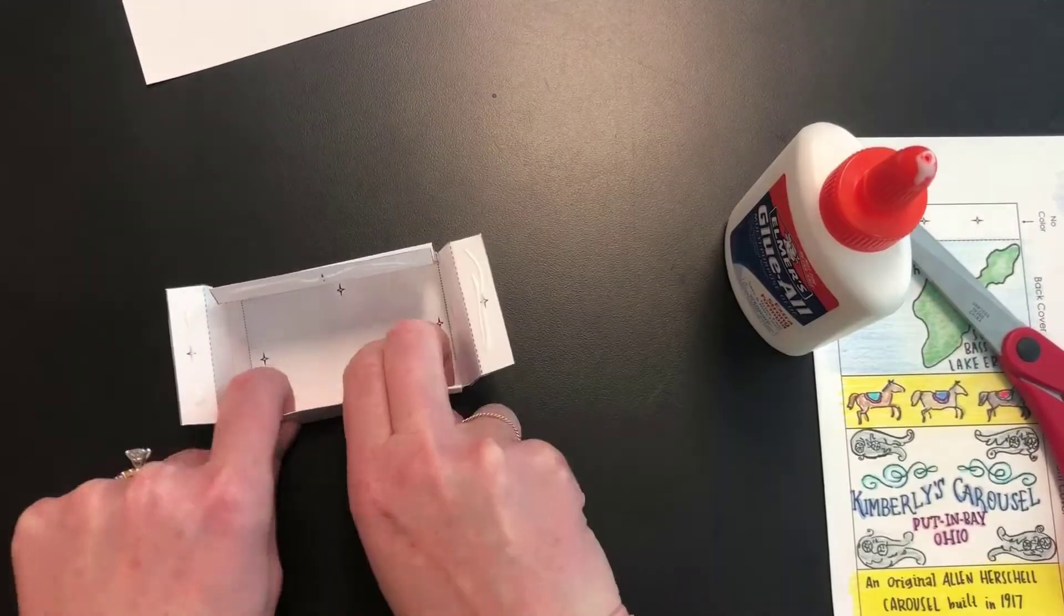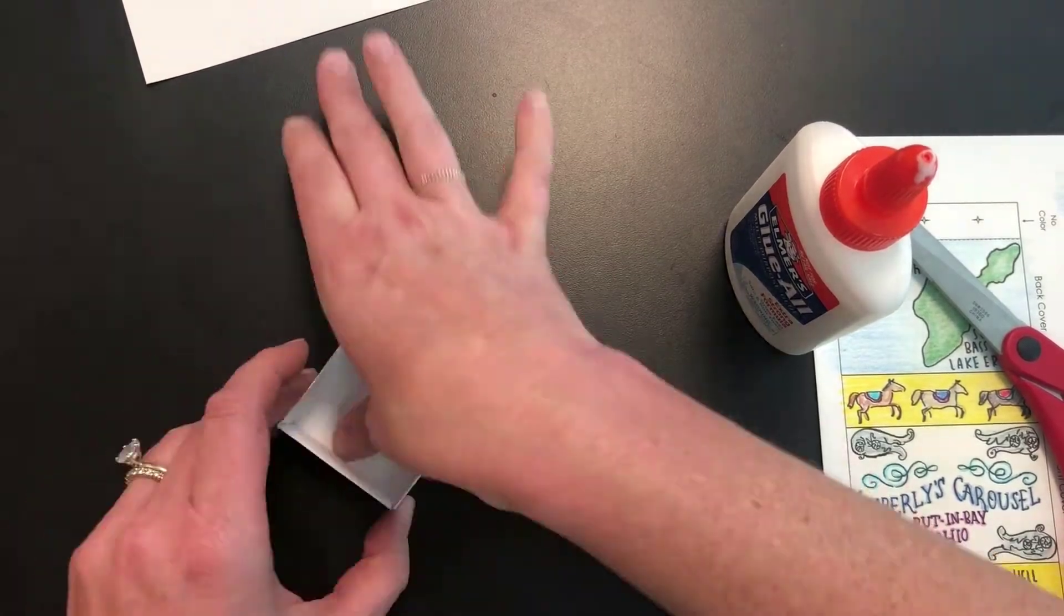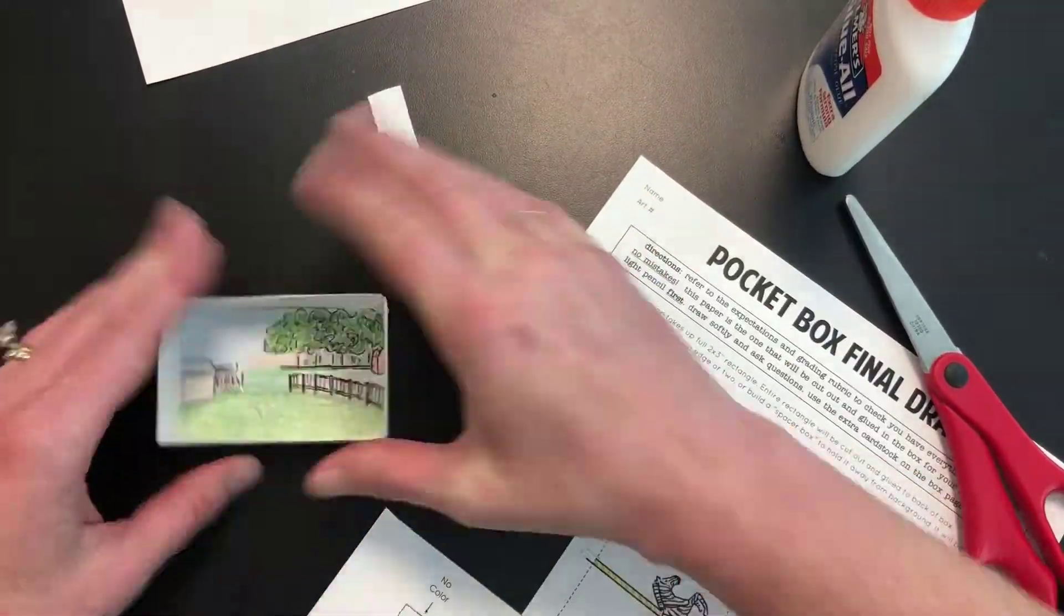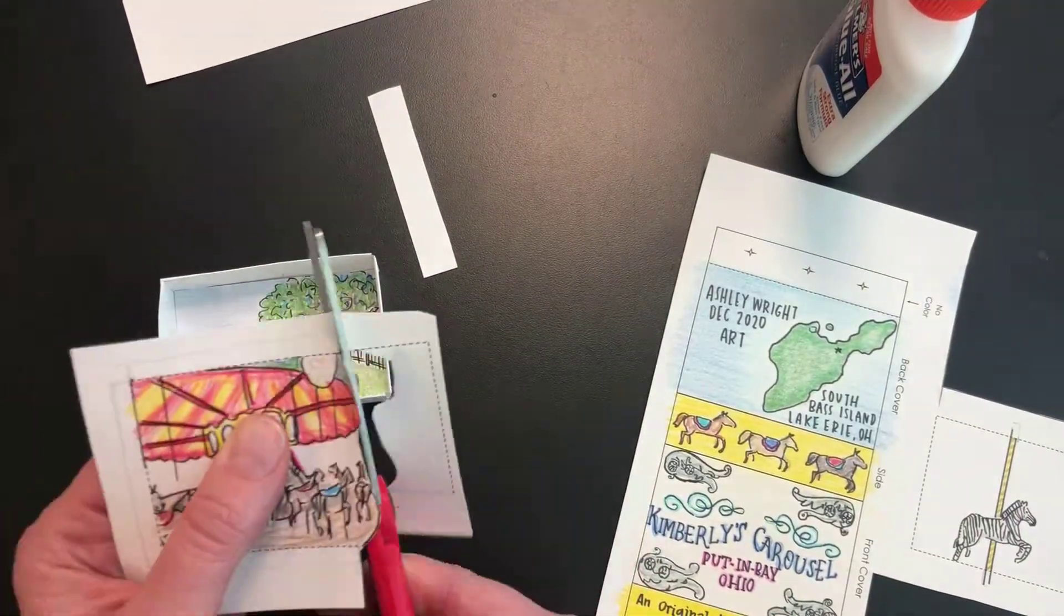I'm going to use thin layers of glue as I tuck tabs in and glue them into place. I'm going to start by cutting out my background scene, trimming it down so it fits flat in the back of the box, and glue it into place.